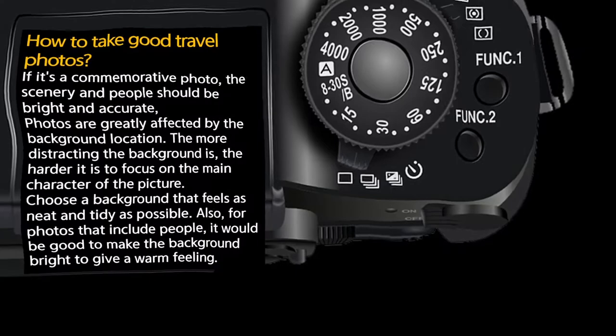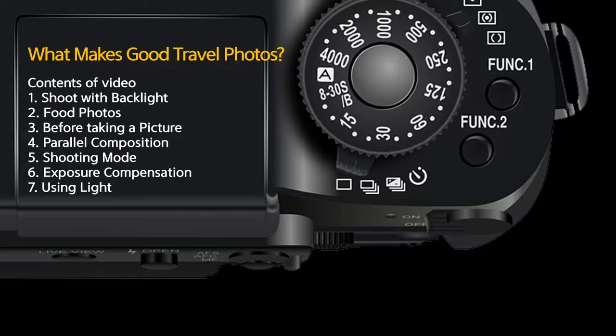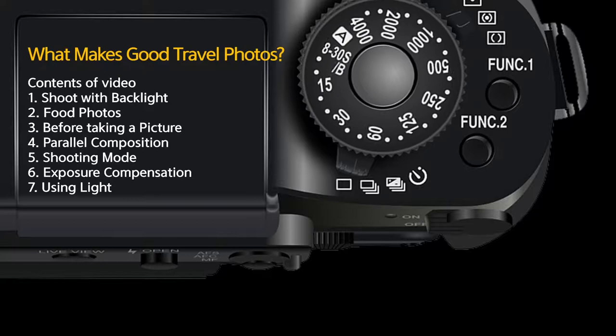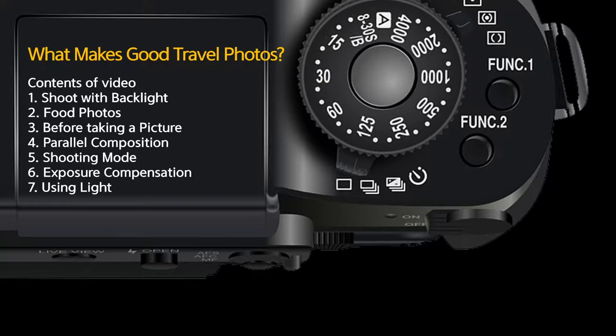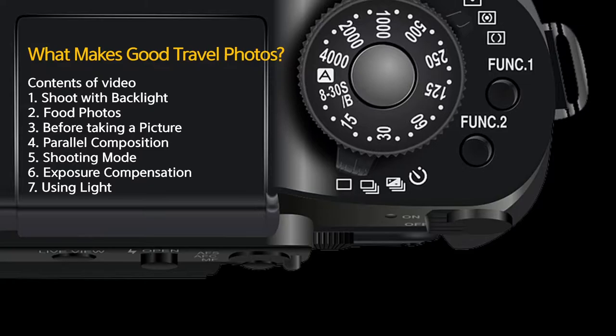What makes good travel photos? Today's video covers: 1. Shoot with backlight, 2. Food photos, 3. Before taking a picture, 4. Parallel composition, 5. Shooting mode, 6. Exposure compensation, and 7. Using light.